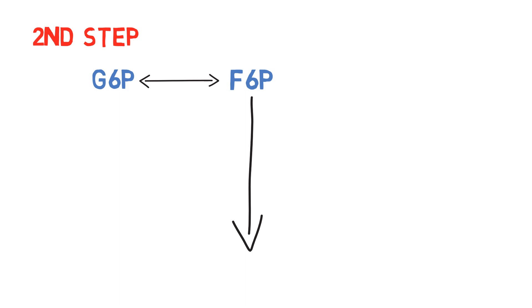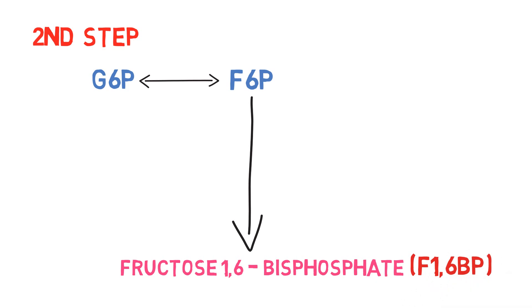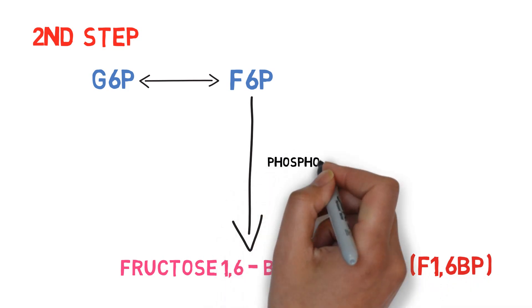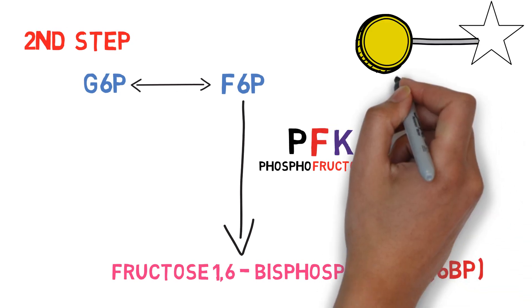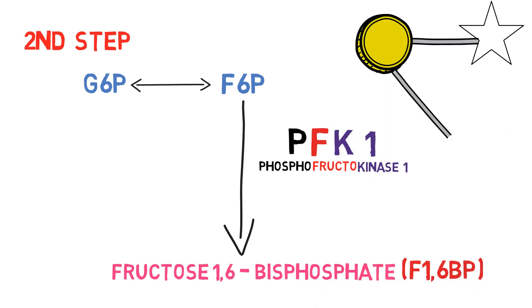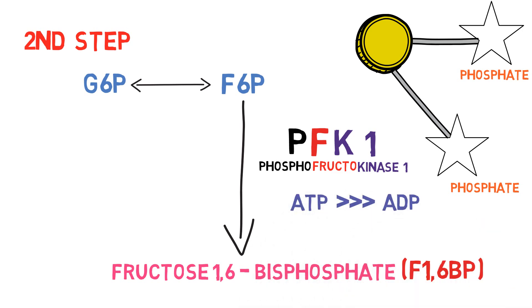The second important reaction is converting fructose-6-phosphate into fructose-1,6-bisphosphate. It is done by phosphofructokinase-1, the PFK1 enzyme. At the end of this reaction, fructose-6-phosphate gets another phosphate group and another ATP has been utilized. By now, the cell has utilized two ATP molecules for glycolysis.